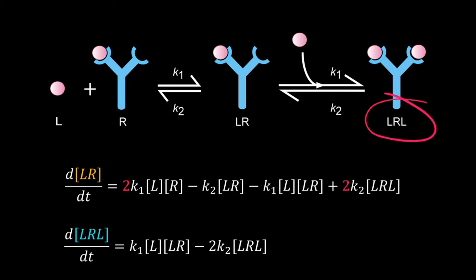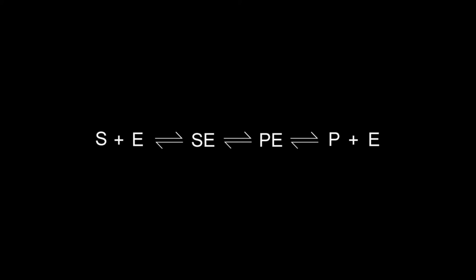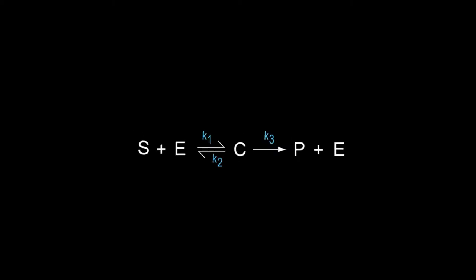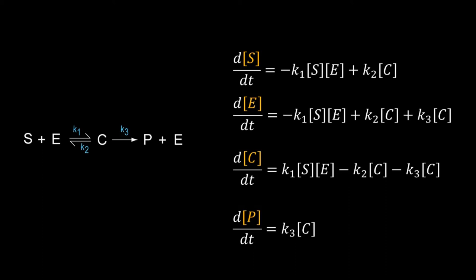In an enzymatic reaction, a substrate is converted to a product in the presence of an enzyme. If we simplify the process, we can imagine it as a single reaction and write the ODE using the law of mass action, but remember the concentration of the enzyme will not be affected. In reality, an enzymatic reaction is a multi-step process with two intermediates: the substrate-enzyme complex and the product-enzyme complex. We can simplify this scheme by combining both intermediate complexes into one entity C and assuming that the C-to-product conversion is not reversible. Now we can write four ODEs for four components.